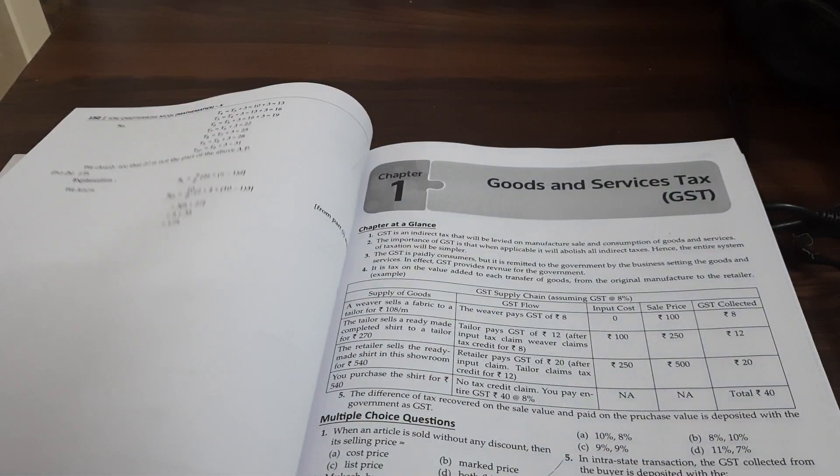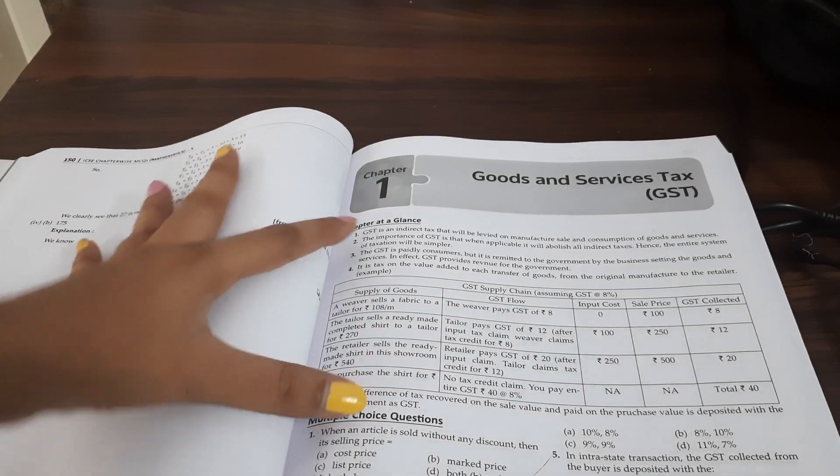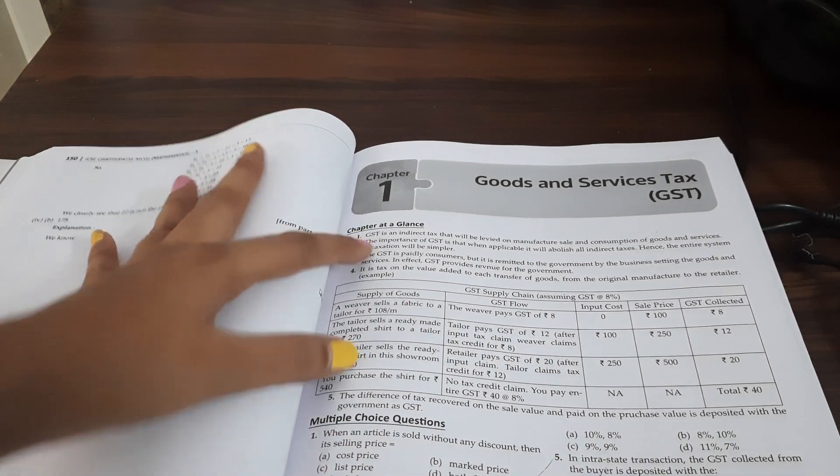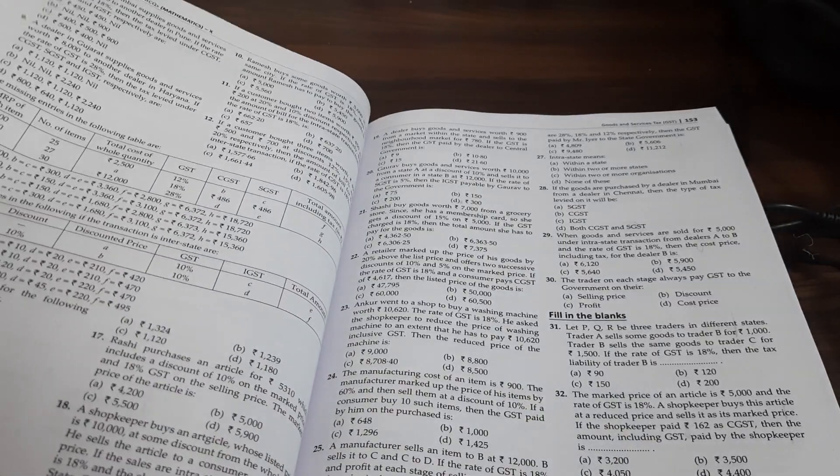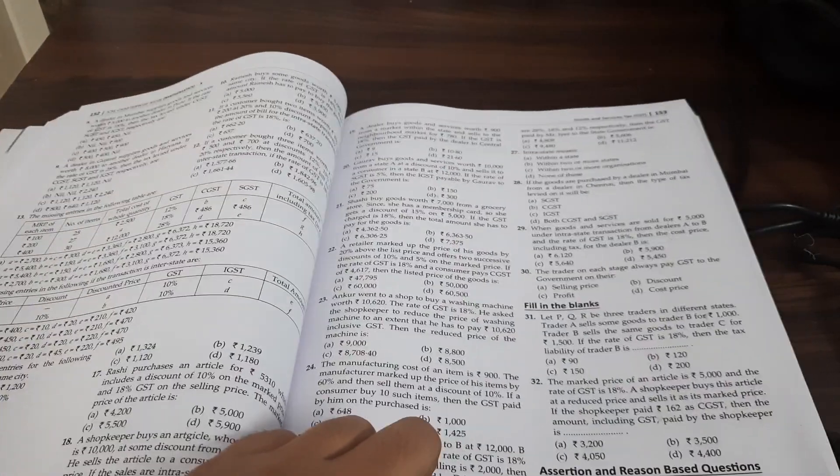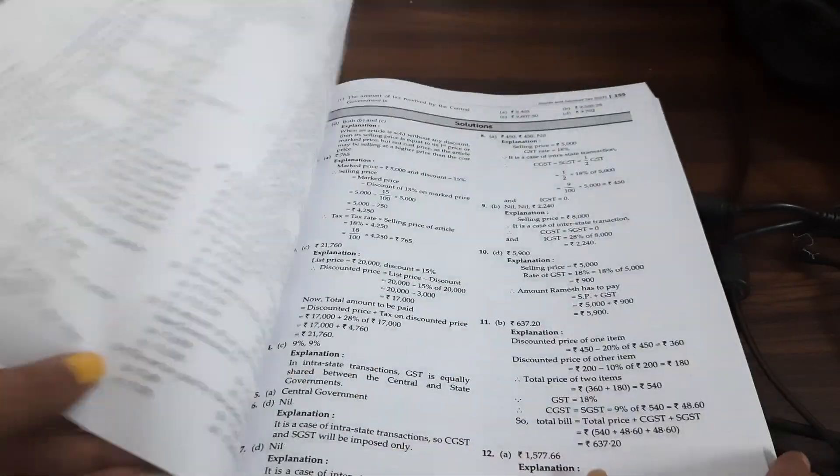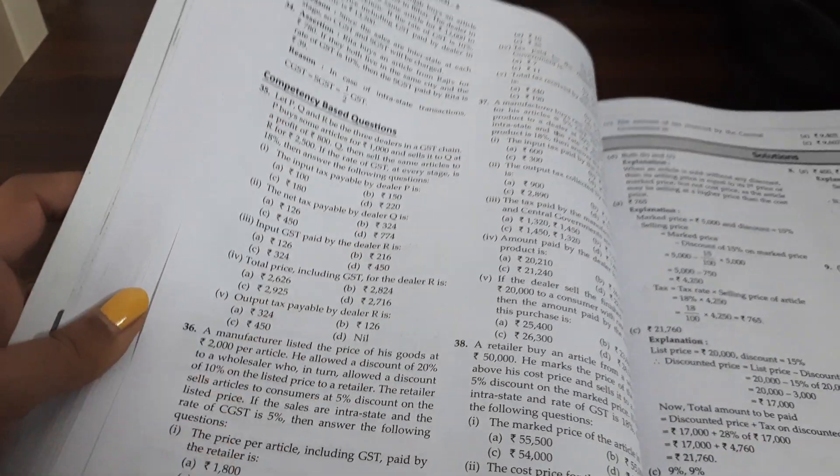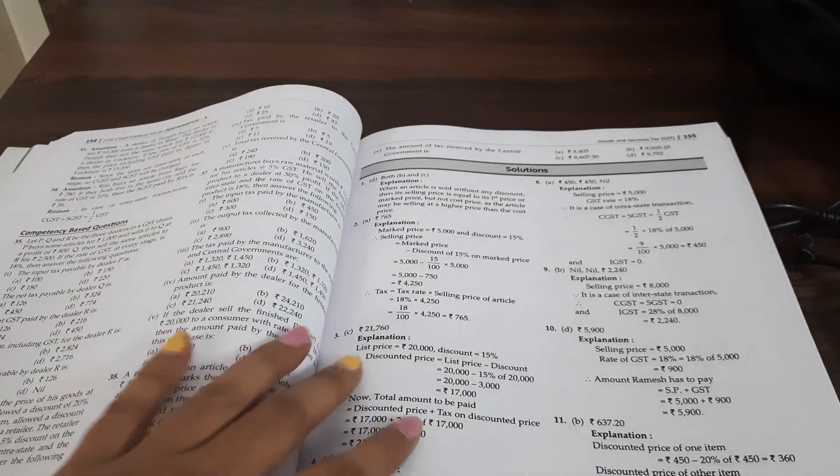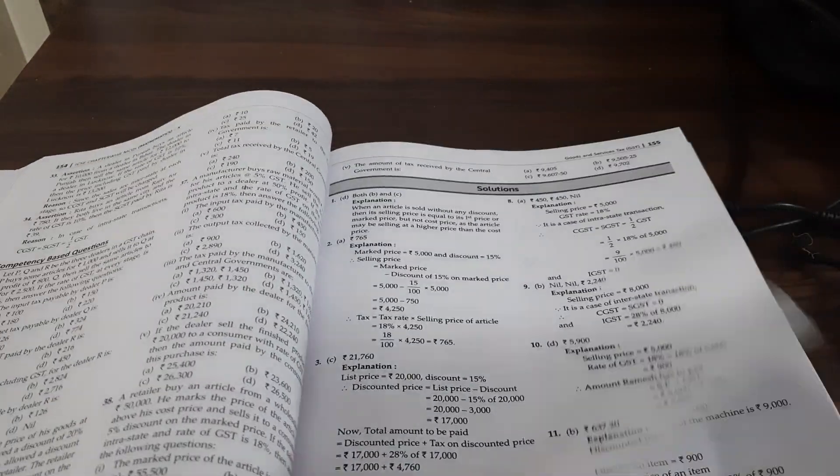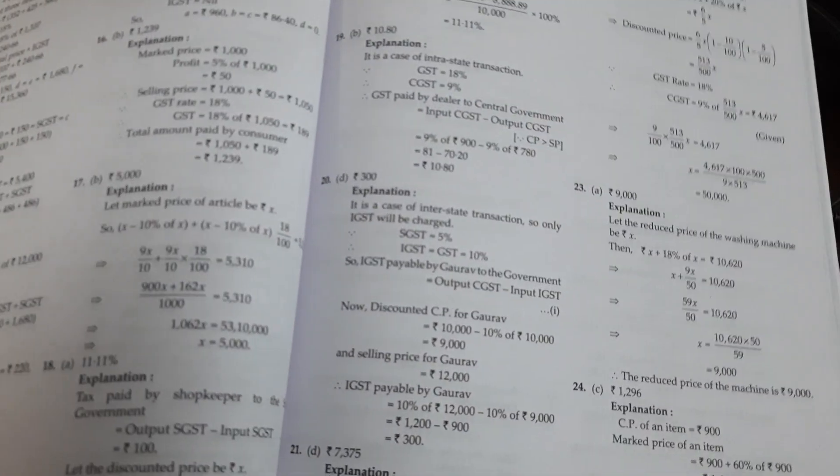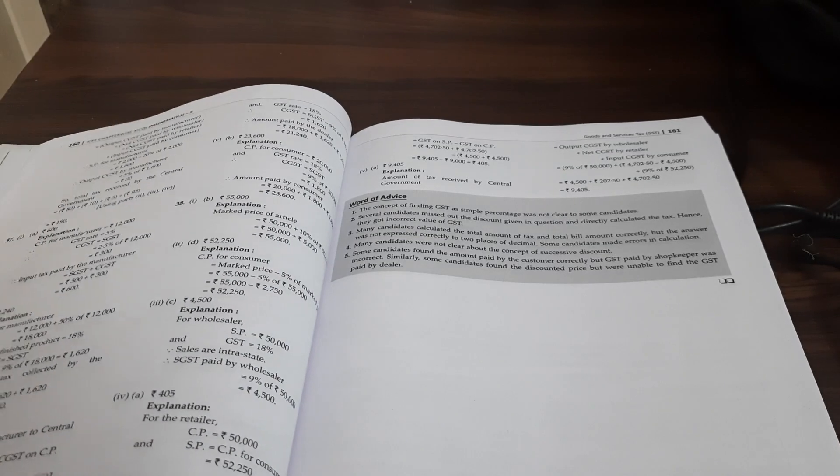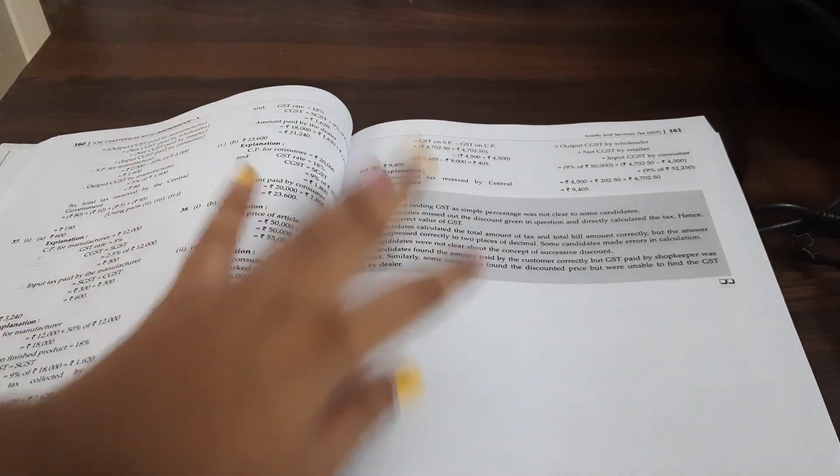For every subject, they have first solved the specimen question paper. Now, for example, Goods and Services tax. Chapter at a glance. Then, multiple choice questions are there. Then, assertion and reason based questions are there. And then, the best part is, then competency based questions are also there. Then, the best part is, they have done the full solution of all the questions. In detail, they have shown you all the solutions. So, you can see for each chapter, a lot of solutions are given. And then, word of advice.